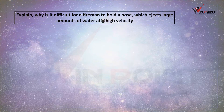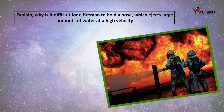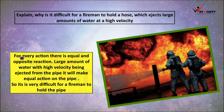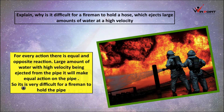Why is it difficult for a fireman to hold a hose that ejects a large amount of water at high velocity? When a huge amount of water is ejected forward with high velocity from the pipe, there is an equal and opposite reaction in the backward direction. This makes it very difficult for a fireman to hold the pipe.